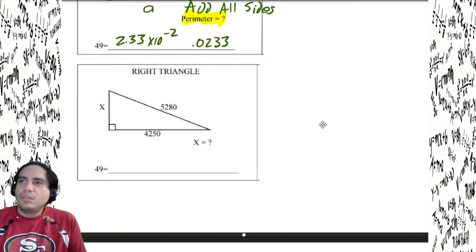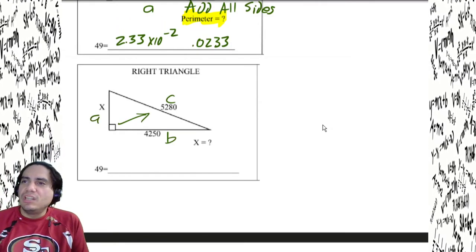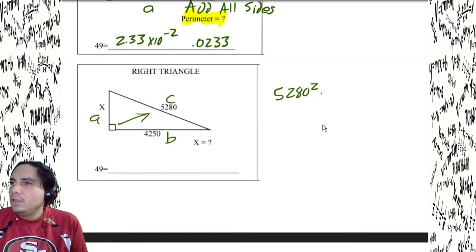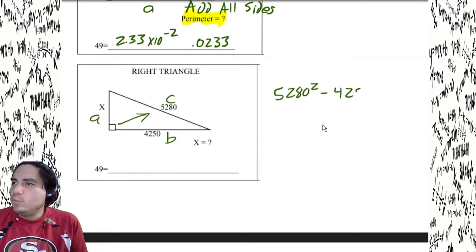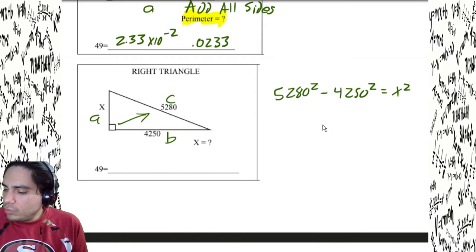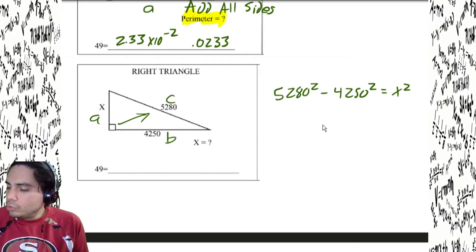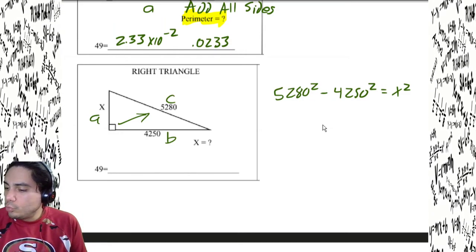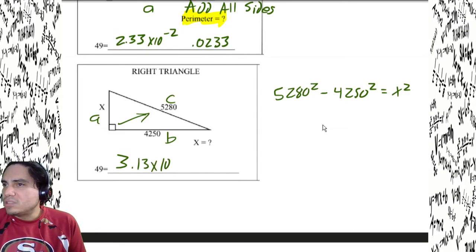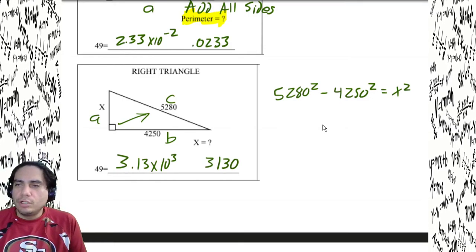We've got c and a leg, missing the other leg. 5280 squared minus 4250 squared equals x squared. 5280 squared minus 4250 squared, subtract, square root — answer is 3.13 times 10 to the third, or 3130. That's the missing leg.